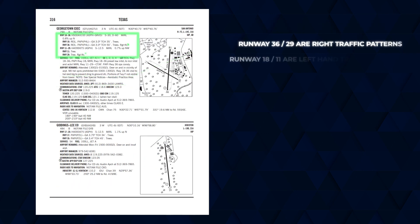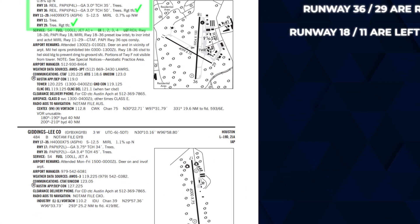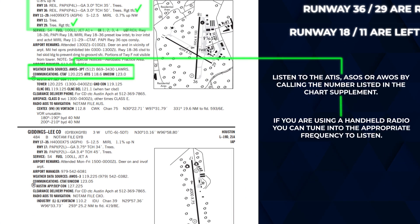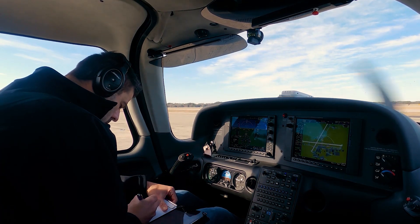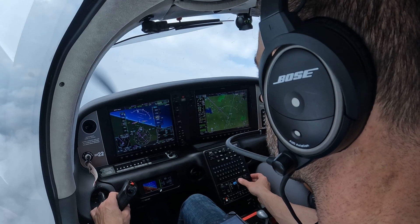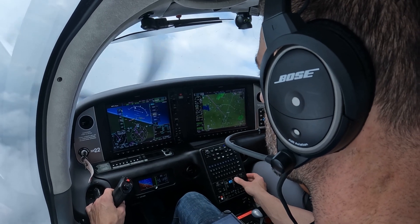You can also listen to something called ATIS, ASOS, or AWOS, depending on the airport you're flying nearby. This gives pilots information about what runways are being used as the active runway, as well as weather information and other things going on in the airport environment. This can be especially useful for drone pilots as well.